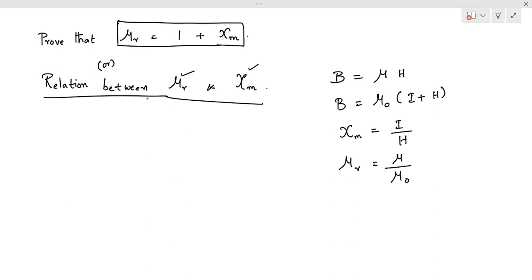Now, we are going to use B is equal to mu 0 into I plus H. And B is equal to mu H is also taken. Okay, mu 0 into I plus H.